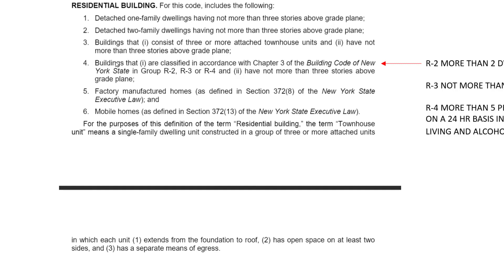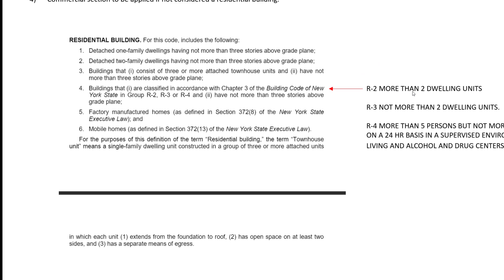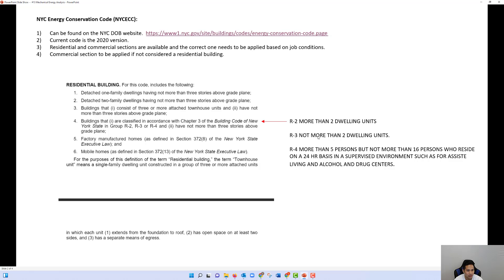Buildings classified as Group R2, R3, and R4 not having more than three stories above grade plane are also residential. R2 is more than two dwelling units; R3 is not more than two dwelling units; R4 is more than five but not more than sixteen persons residing on a 24-hour basis in a supervised environment such as assisted living or alcohol and drug centers. Most of our work falls under R2 or R3.